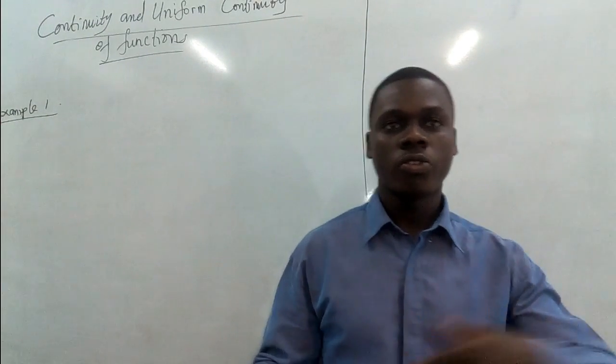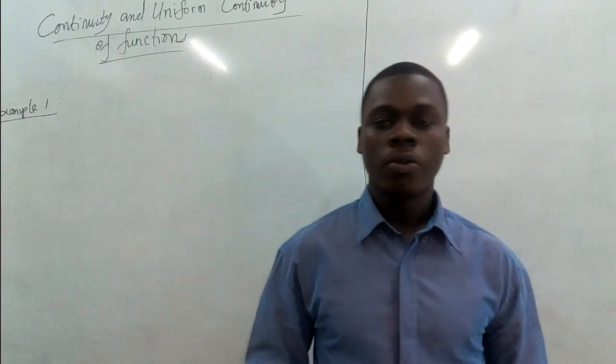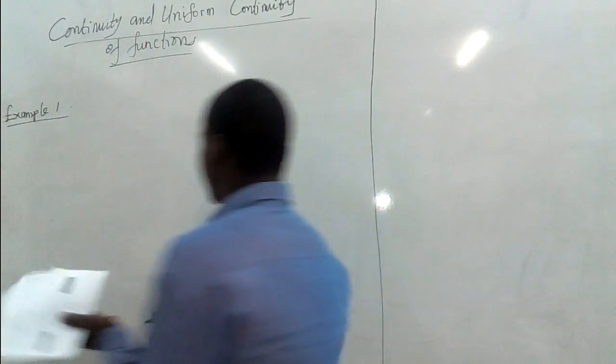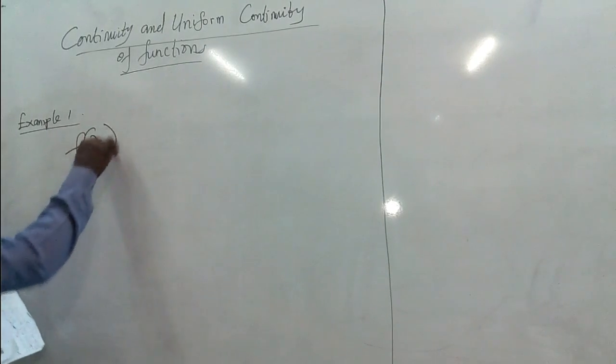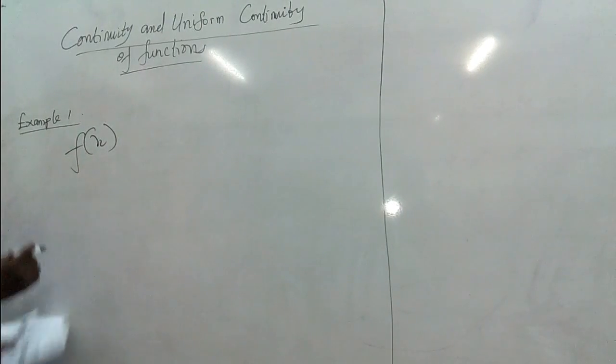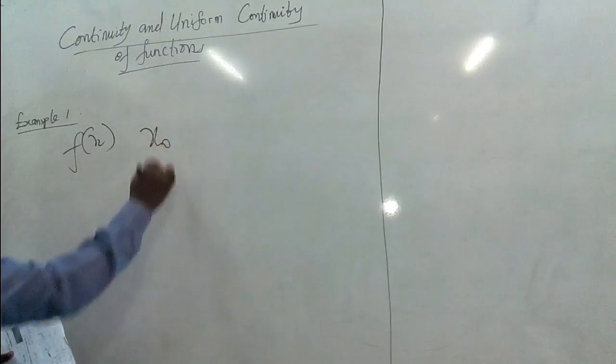Thus, we are talking about uniform continuity. Now, we actually said that when we have a function f, then we say that it is continuous at a point, say x₀.